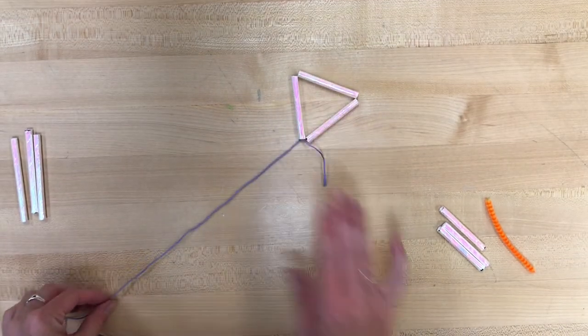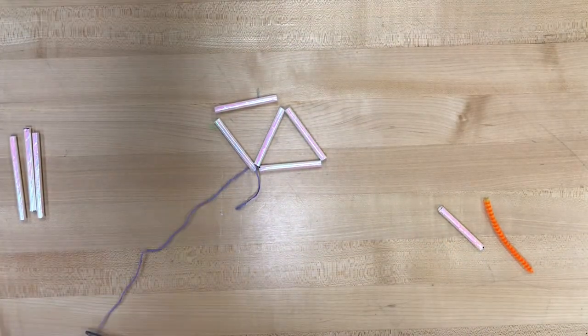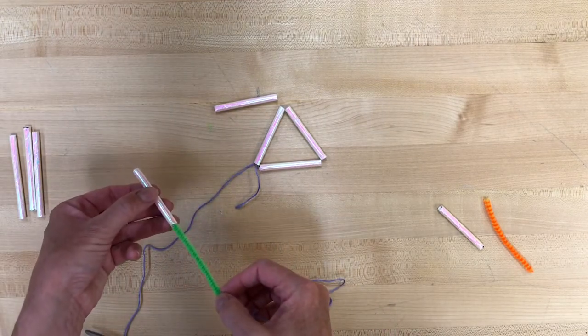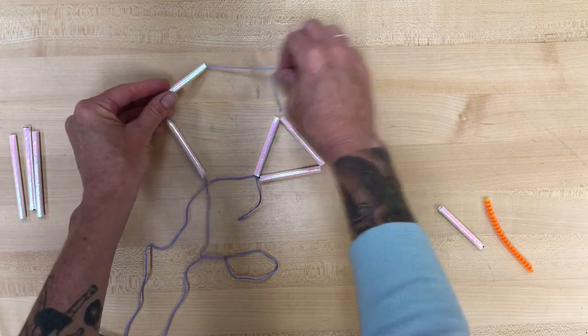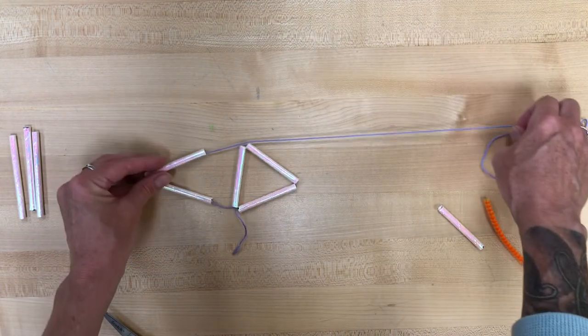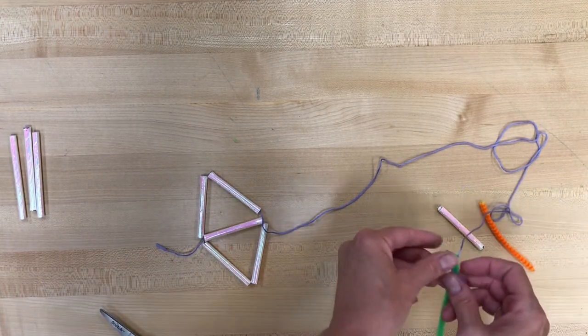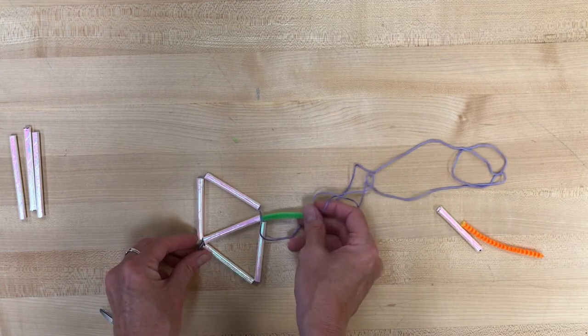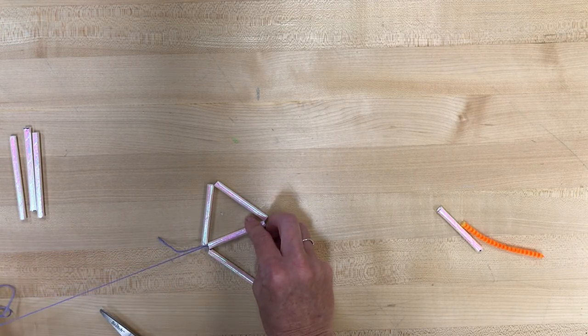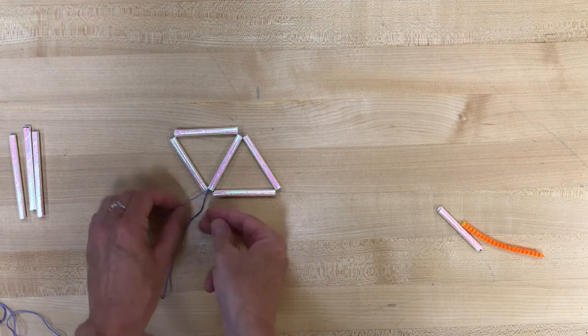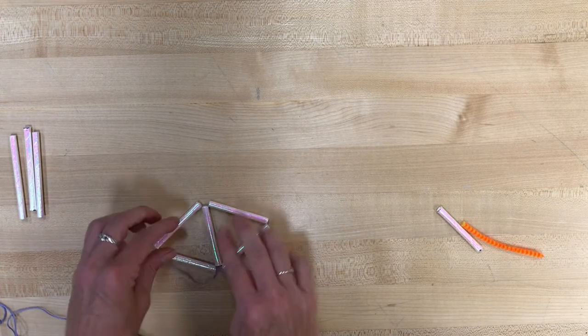Okay, the next thing we're gonna do is take two more of the shorter length of straw. And basically, we're going to do the same thing using one side of that triangle that you already made. We're going to pass your thread through those two straws, and then pull it all the way through, so that you can make another triangle shape. And then you'll end up passing, we'll do this a lot, where you will pass your needle through a straw that it's already been through, just to make sure that you've got a strong, sturdy shape. And then you can tie another knot to make sure that that shape will hold in place as well.